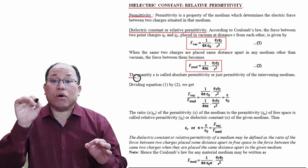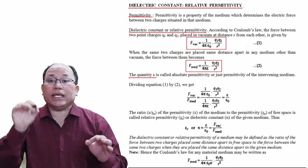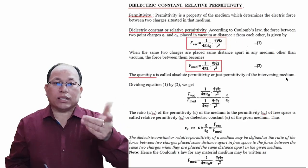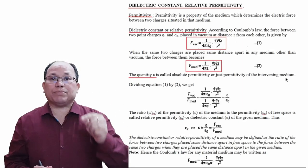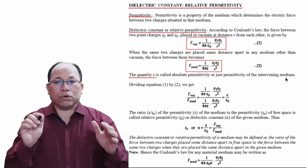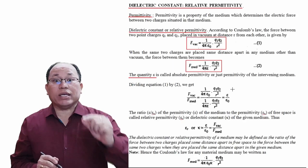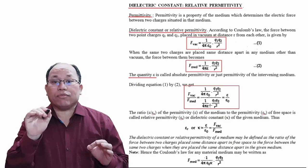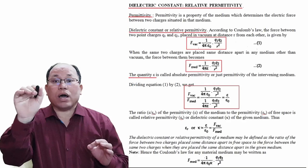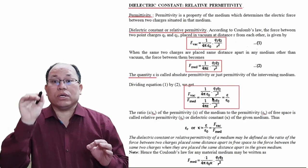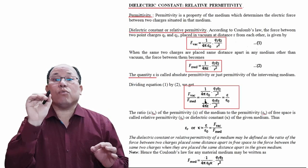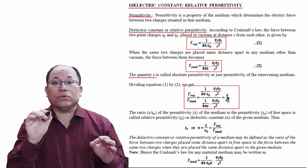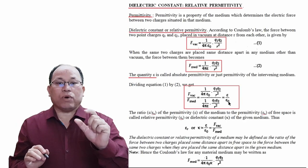The quantity ε is called the absolute permittivity or simply permittivity of the intervening medium — ε₀ is for free space and ε is for the medium. Now, dividing equation 1 by equation 2, we find: F_vacuum / F_medium = ε / ε₀.